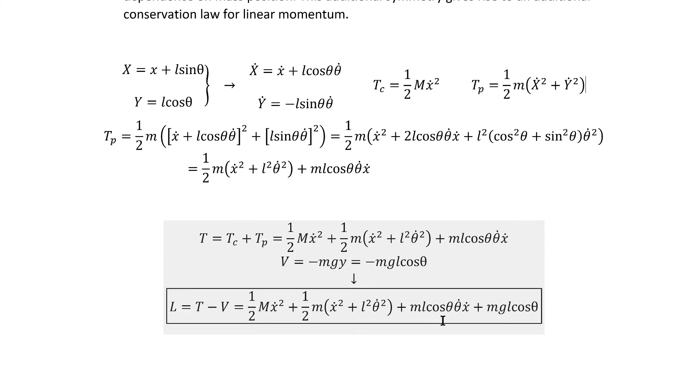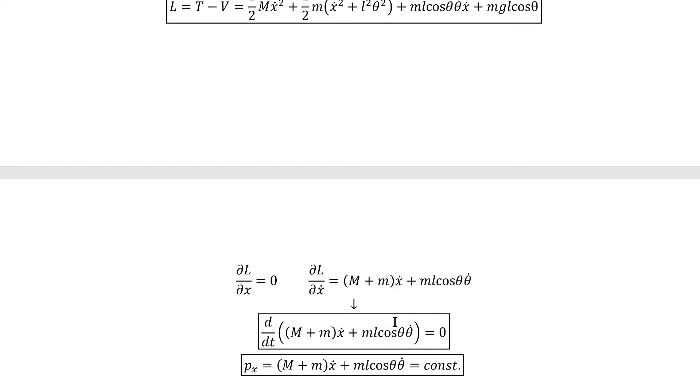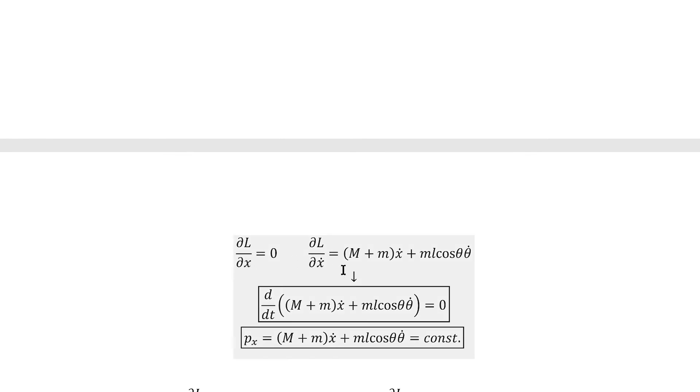And we can see it's not dependent on x, so we've got that extra symmetry that we were expecting beyond time translation invariance leading to energy conservation. We'll see the resulting conserved quantity come out when we calculate the equations of motion, at which point we can figure out exactly which quantity it is that's being conserved by that invariance.